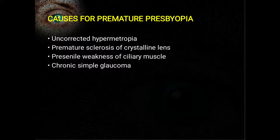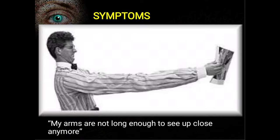Sometimes presbyopia may present early — before 40 years, even at 35 — because of uncorrected hypermetropia. The person can see clearly at distance by accommodating, but accommodation is insufficient to correct all the hypermetropia for near objects. There may also be premature sclerosis of the crystalline lens, weakness of the ciliary muscle, or patients with glaucoma may present with early presbyopia.